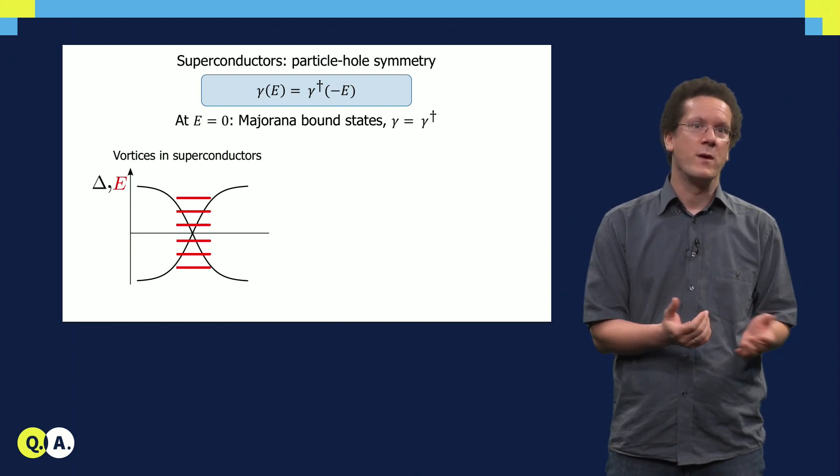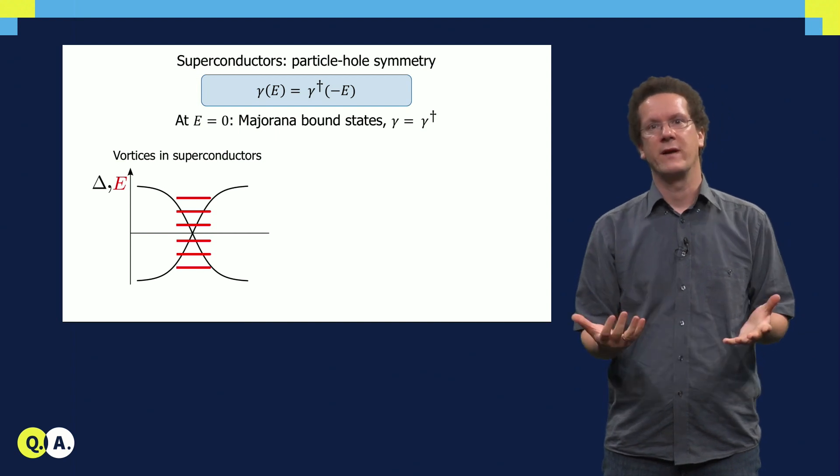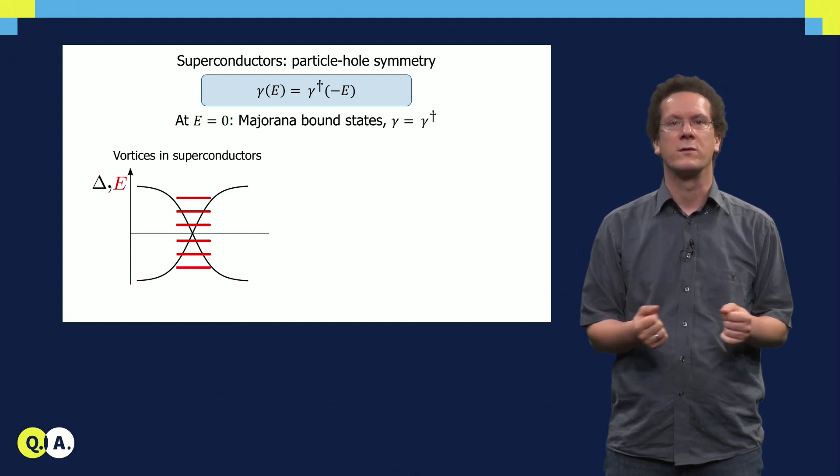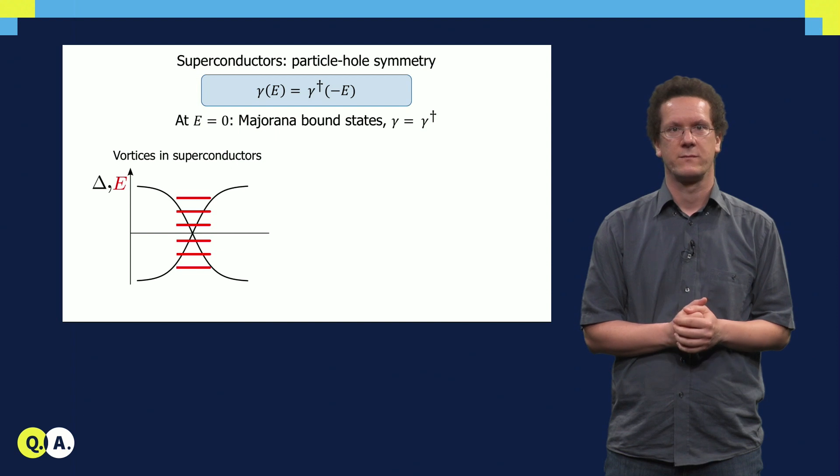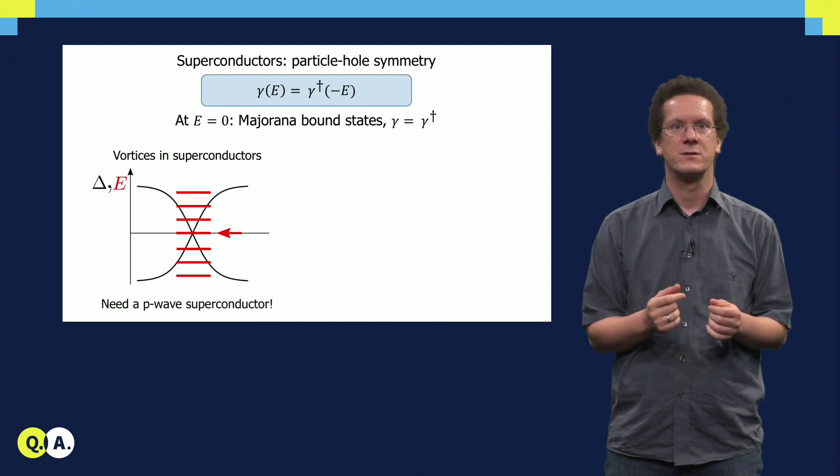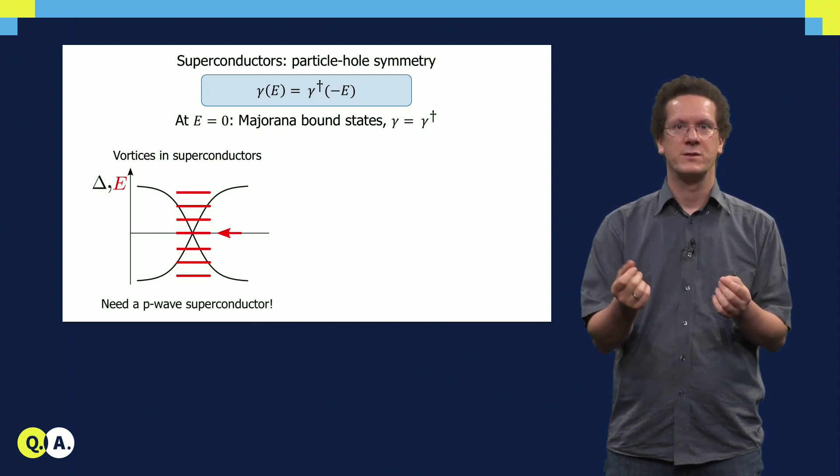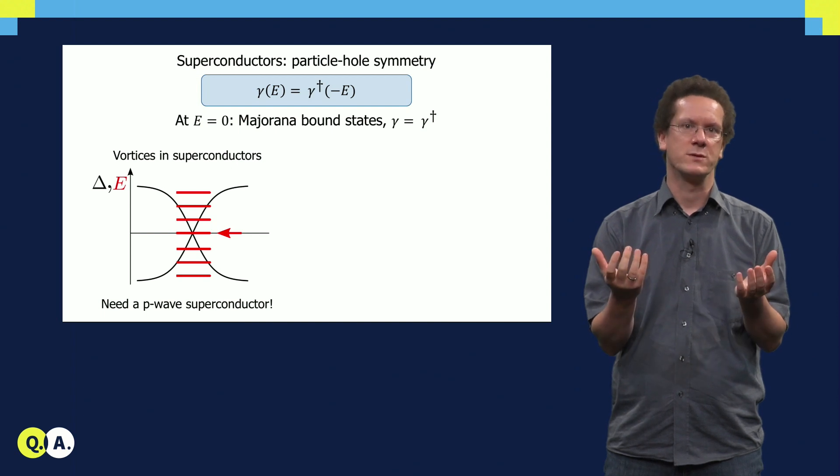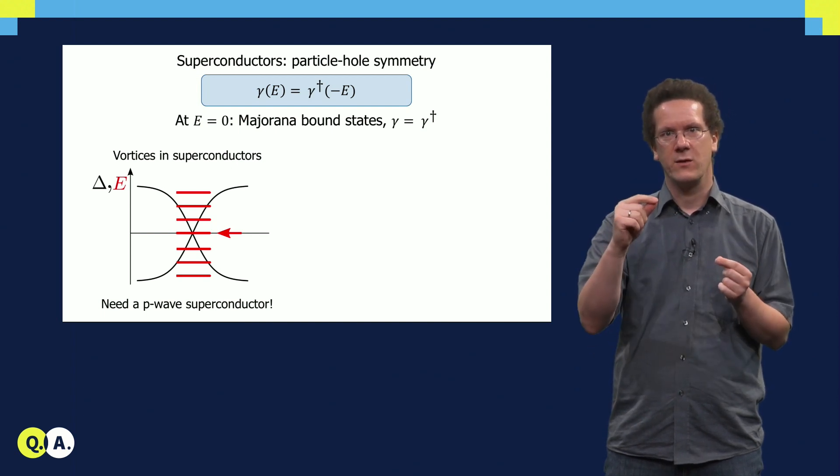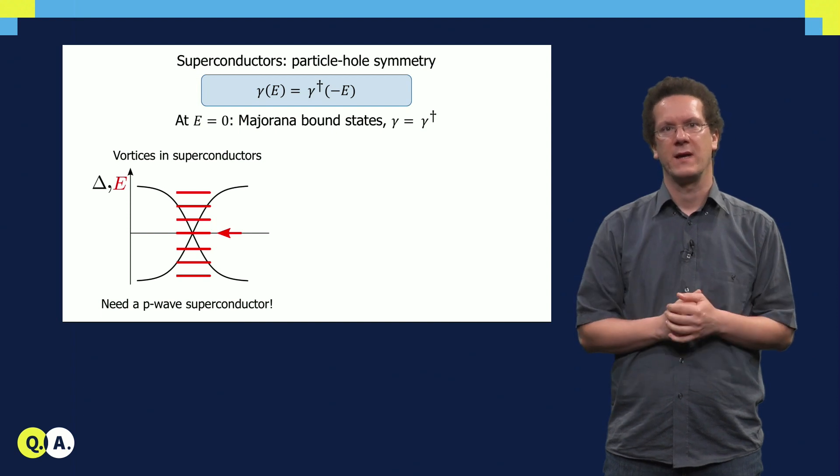The reason for this is the quantum mechanical zero point motion. To get rid of the zero point motion, one needs to consider unconventional superconductors, such as so-called p-wave superconductors. In that case, there is an additional Berry phase of pi, which can cancel the zero point motion. We get exactly then one state at zero energy, which is a Majorana bound state.